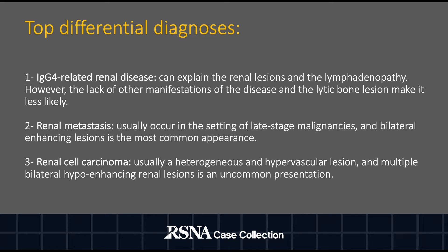One may also consider renal metastases from a solid organ primary malignancy, but this usually occurs in late stage malignancy and the primary tumor is usually already known. Renal cell carcinoma is another consideration, but it is less likely as it is usually a heterogeneous and hypervascular solitary lesion, and multiple bilateral hypoenhancing renal lesions is an uncommon presentation.